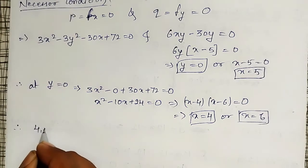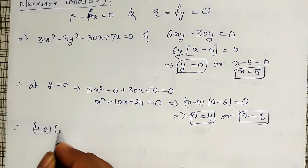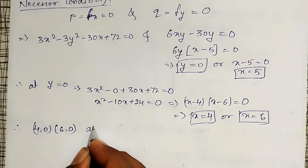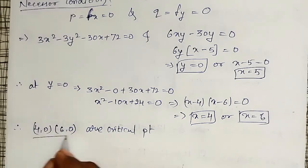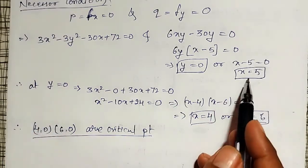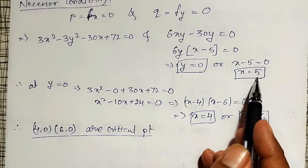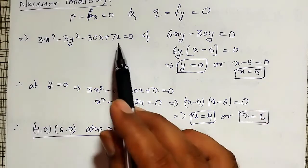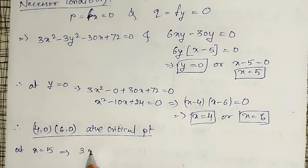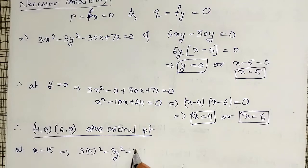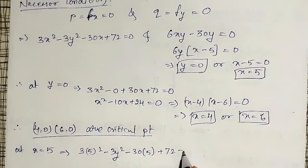When y = 0, the critical points are (4, 0) and (6, 0). But one more case is possible — at x = 5. At x = 5, substituting into the first equation: 3(5²) - 3y² - 30(5) + 72 = 0.